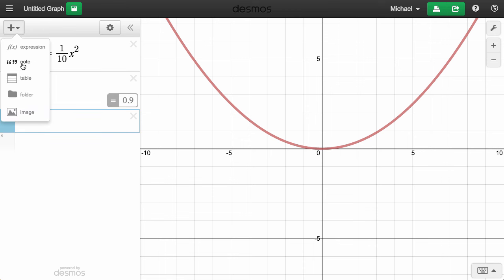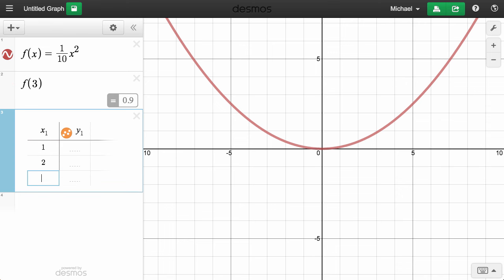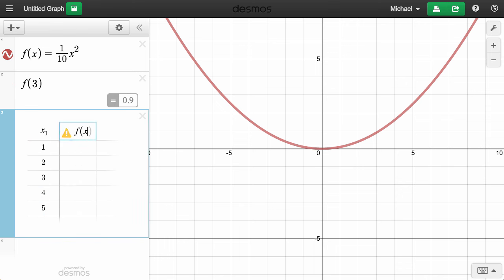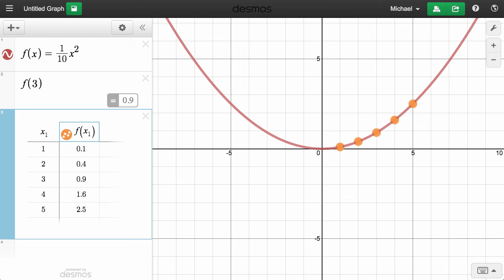Similarly, if we add a table and enter several x values, and then define our second column as f(x), Desmos will automatically fill out the entire column.